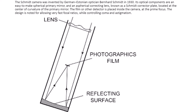The Schmidt-Cassegrain derived from the Schmidt camera invented by Bernhard Schmidt in 1930. Its primary mirror is spherical, and the front of the tube has a Schmidt corrector plate rather than being open. The corrector bends incoming light slightly, sending it to the spherical mirror, then back to the secondary. A camera or detector can be placed at the prime focus, allowing very fast focal ratios for quicker exposures, and it helps control coma and astigmatism.